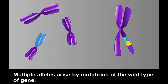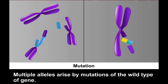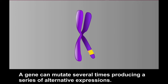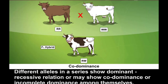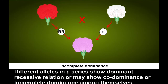Multiple alleles arise by mutation of the wild type gene. A gene can mutate several times, producing a series of alternative expressions. Different alleles in a series show dominant-recessive relation, or may show co-dominance or incomplete dominance among themselves.